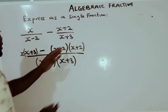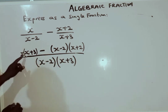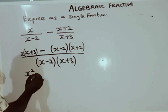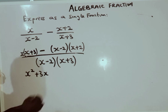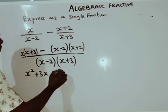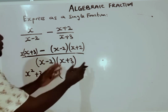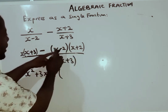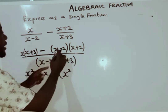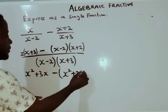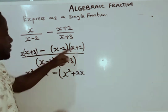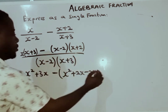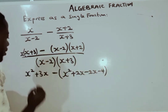Now I use these to multiply. For the first part: x times x gives x squared, then x times 2 gives 2x, then minus 2 times x gives minus 2x, and minus 2 times plus 2 gives minus 4. All of this is over the LCM.